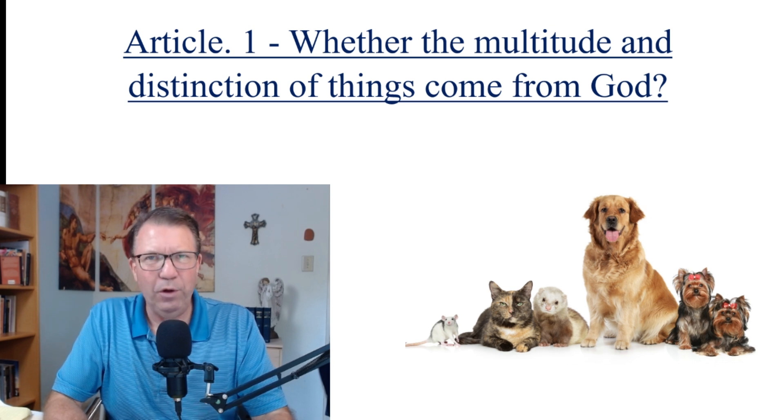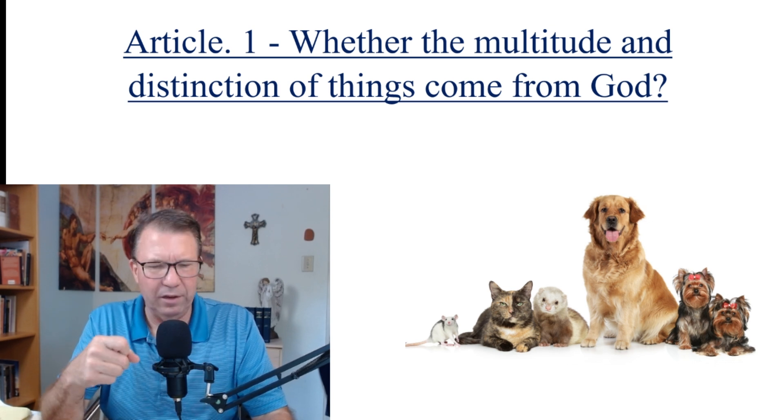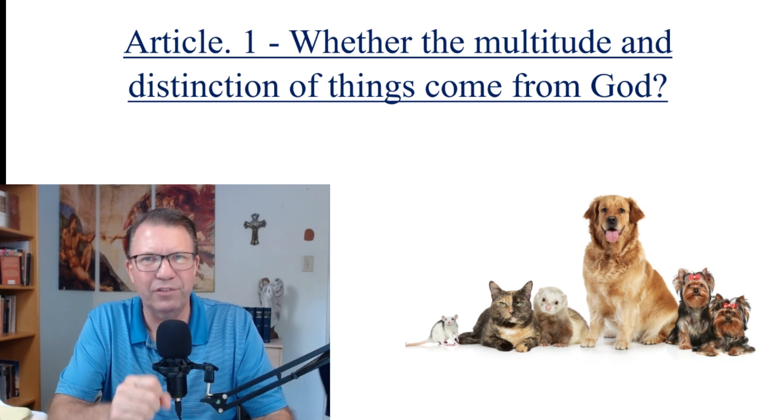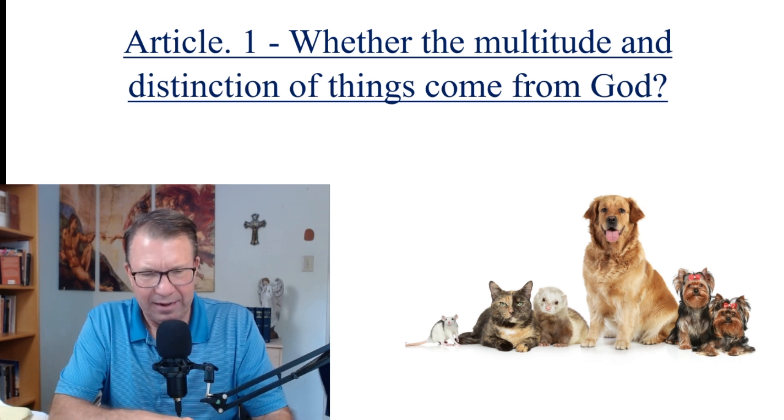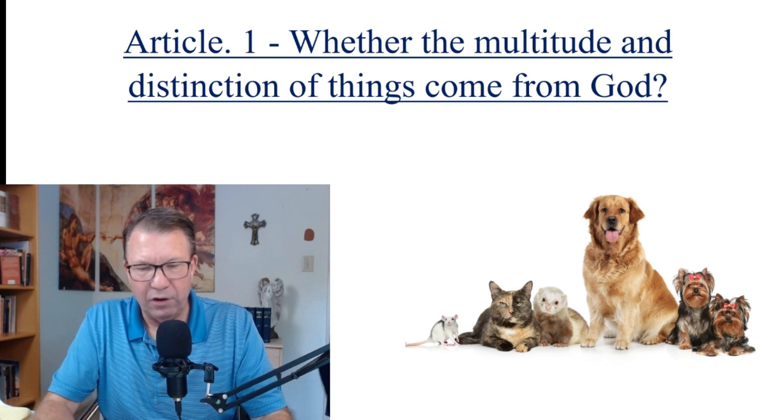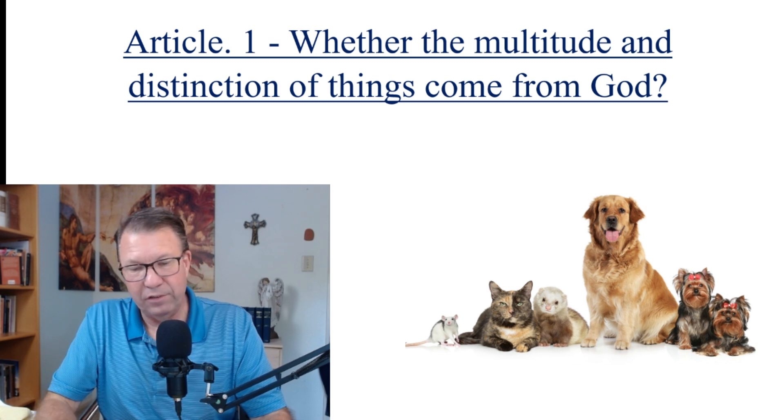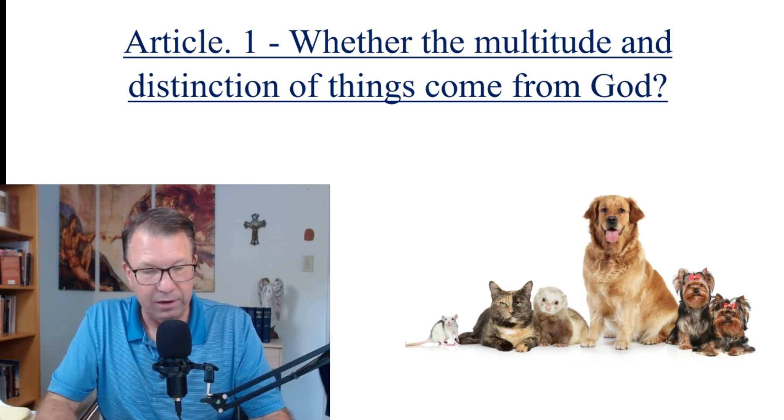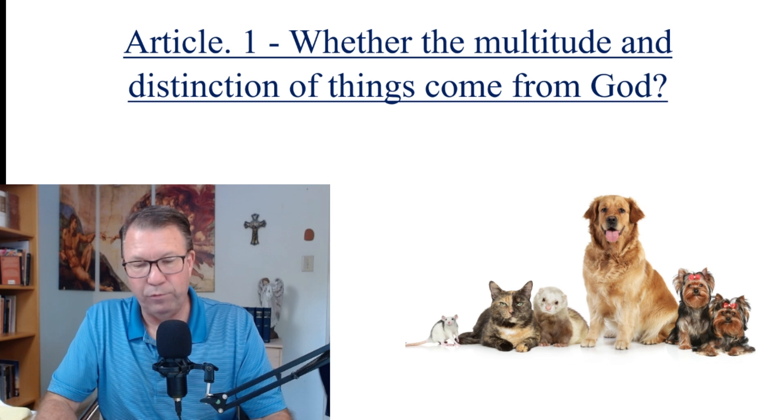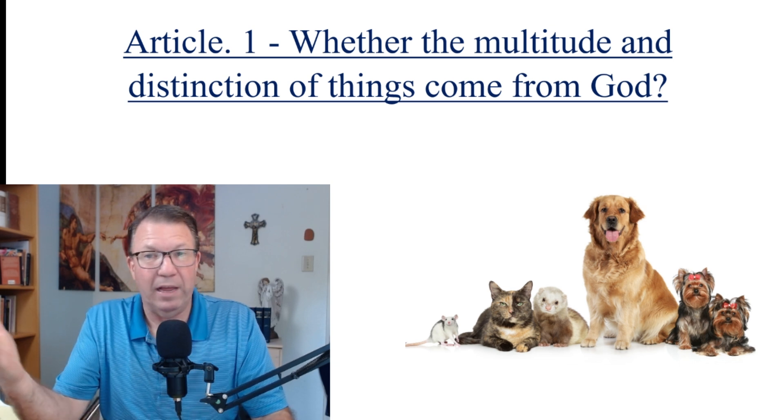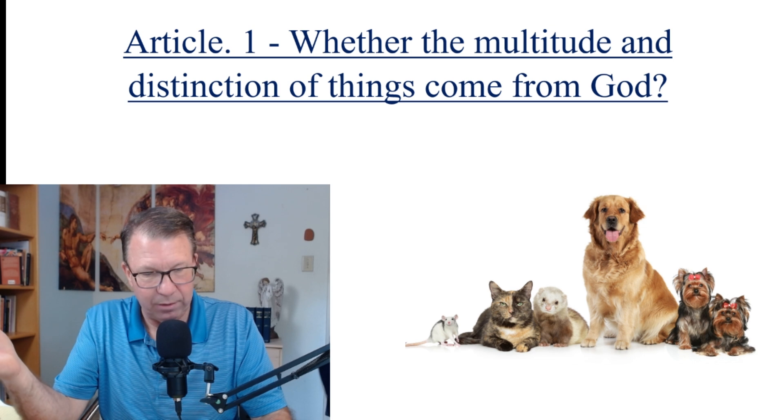He refers to Democritus, who was a pre-Socratic materialist philosopher, and he says Democritus, for instance, and all the ancient natural philosophers who admitted no cause but matter attributed it to matter alone, and in their opinion, the distinction of things comes from chance according to the movement of matter. Just through chance, blind chance, nothing having to do with God himself.